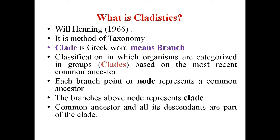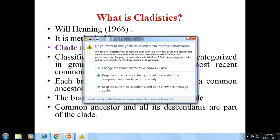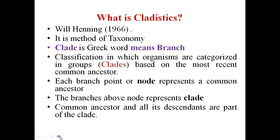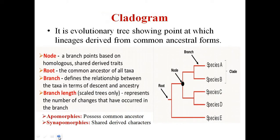The criteria used for classification is the most recent common ancestor. Each branch point or node represents a common ancestor, and branches above the node represent the clade. We will now look at how to construct a cladogram — the diagrammatic representation of this classification — and cover some key definitions needed for cladogram analysis and construction.